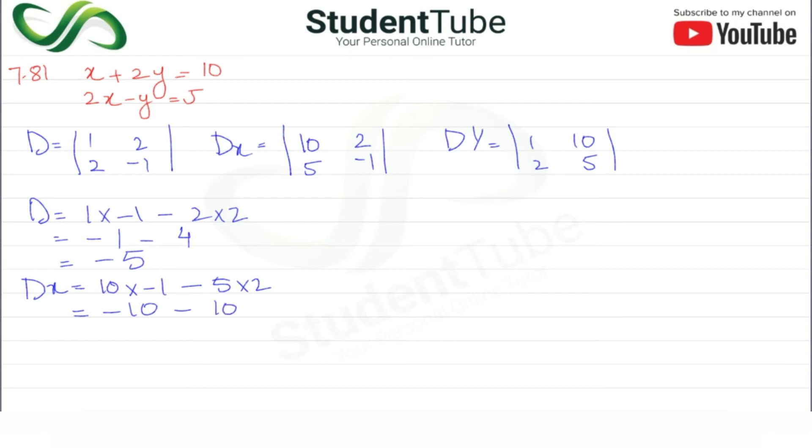Then Dy equals 1 multiply by 5 minus 2 multiply by 10. So 5 minus 20, this becomes minus 15.